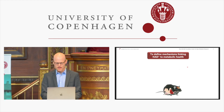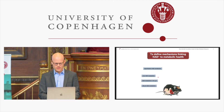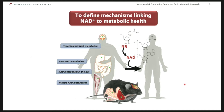The overall aim in my lab is to define mechanisms linking NAD to metabolic health. We usually use the mouse as the primary model organism. We have projects relating to the brain, the liver, the gut, and also the muscle — which is what we'll be talking about today. When we can, we do clinical trials in humans together with Professor Nils Jessen from Aarhus University Hospital and Steener Diabetes Center in Aarhus.